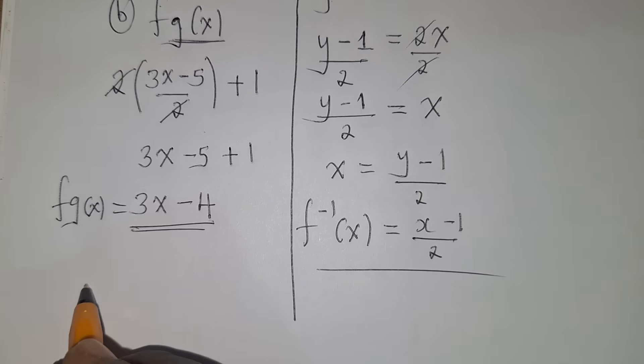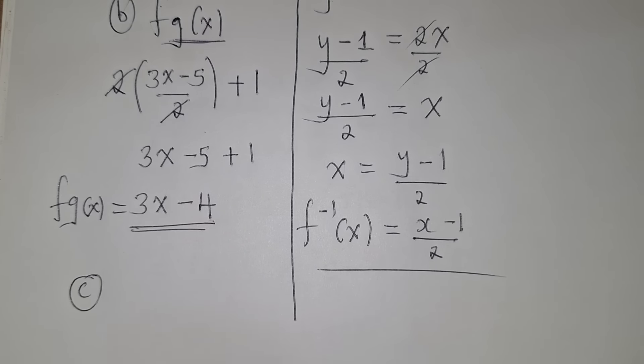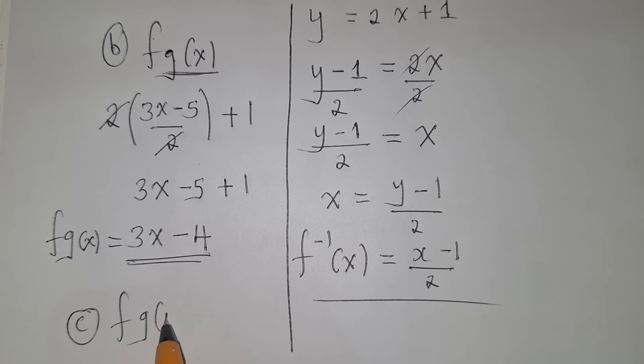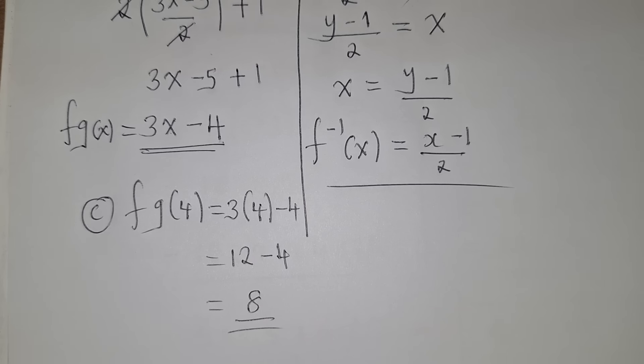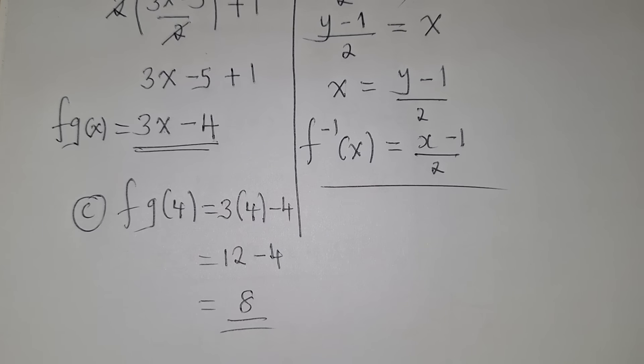For question c, find f(g(4)). This means substitute x = 4 into f(g(x)), so we get 3(4) − 4, which gives 12 − 4 = 8. That is our answer. Those are all the answers for question 1. Let's move to question 2.